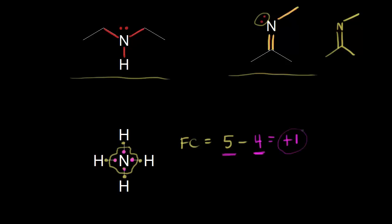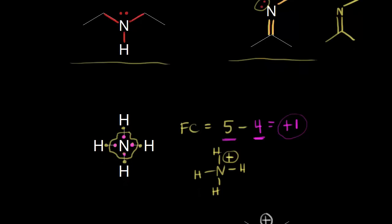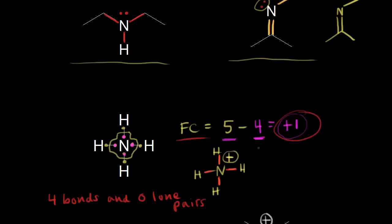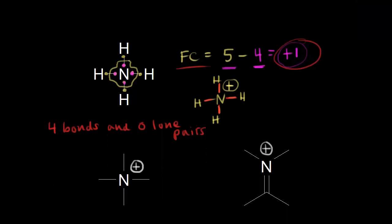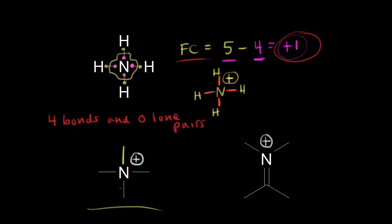So nitrogen has a plus one formal charge. Let me redraw that: nitrogen with four bonds to hydrogen has a plus one formal charge. You should recognize this as the ammonium ion from general chemistry. The pattern here is: when nitrogen has four bonds and zero lone pairs of electrons, the formal charge equals plus one. Looking at examples: on the left, four bonds and no lone pairs gives a plus one formal charge. On the right, counting one, two, three, four bonds and no lone pairs — also a plus one formal charge on nitrogen.